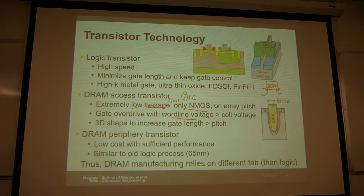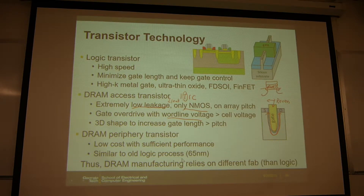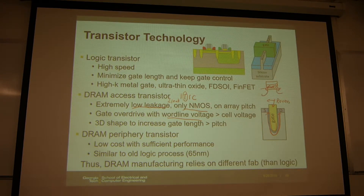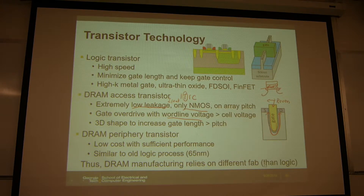This is the DRAM access transistor. Of course DRAM also has peripheral circuits like sense amplifiers, and those transistors are more like logic transistors but at a low technology node — maybe around 65 nanometers or so. DRAM manufacturing is a very special process, different from the foundry which provides logic transistors. That's why DRAM manufacturing these days is only done by a few large companies.